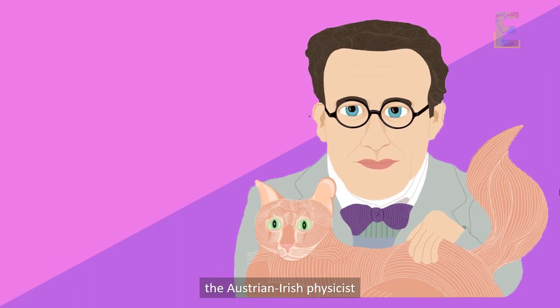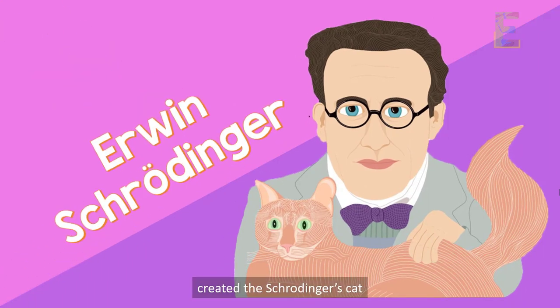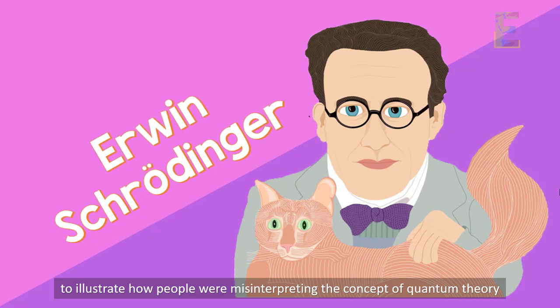The Austrian-Irish physicist Erwin Schrödinger created the Schrödinger's cat to illustrate how people were misinterpreting the concept of quantum theory.